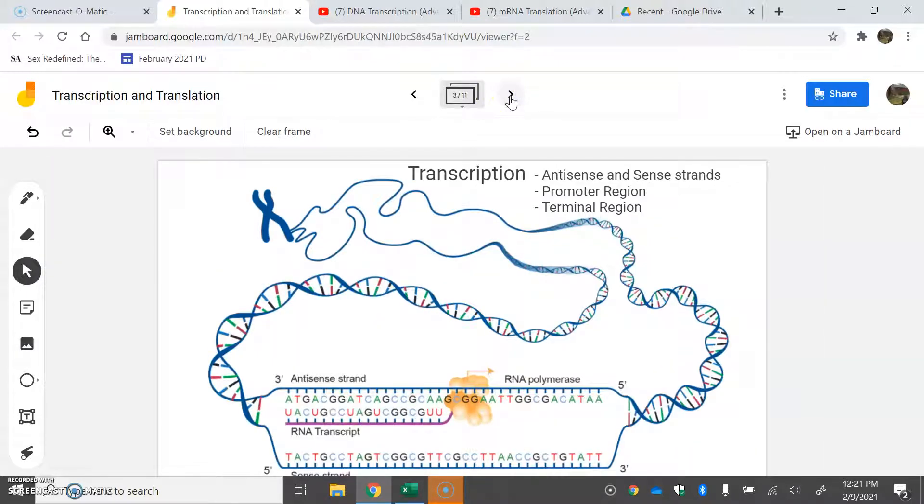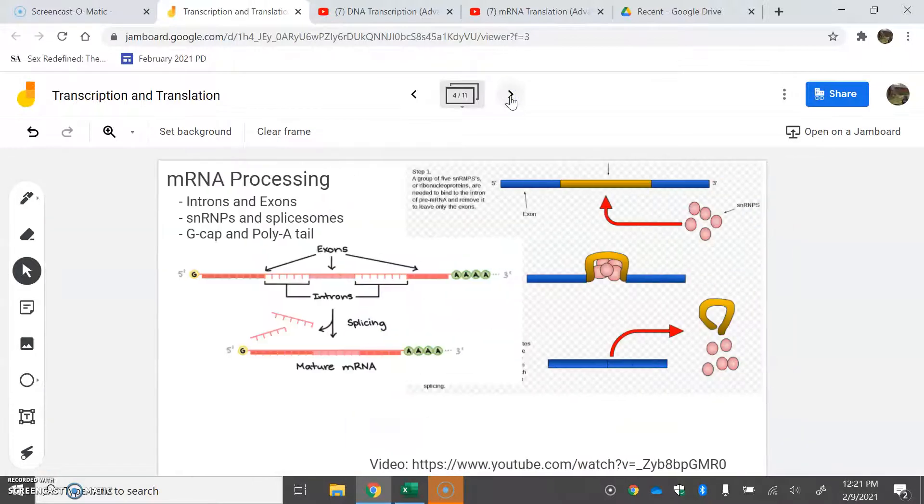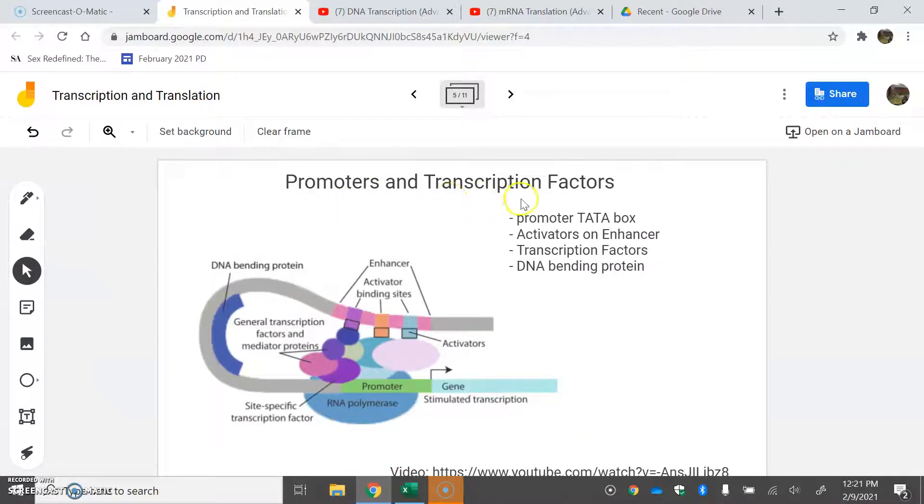We talked about transcription and translation - the process of going from DNA to mRNA is transcription, and then mRNA to polypeptide or protein is translation. As a reminder, we went through transcription steps, how mRNA gets processed and spliced, and how the polymerase will scoot down the gene and transcribe it.